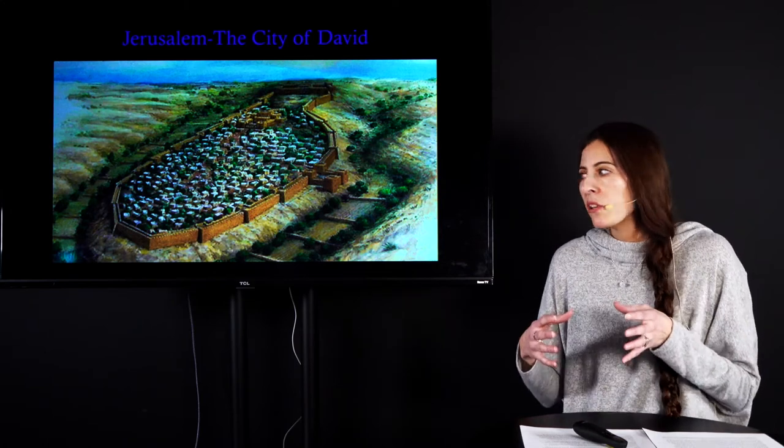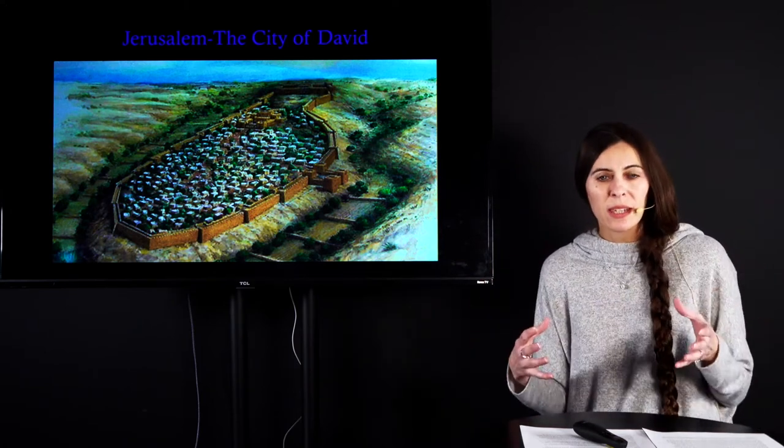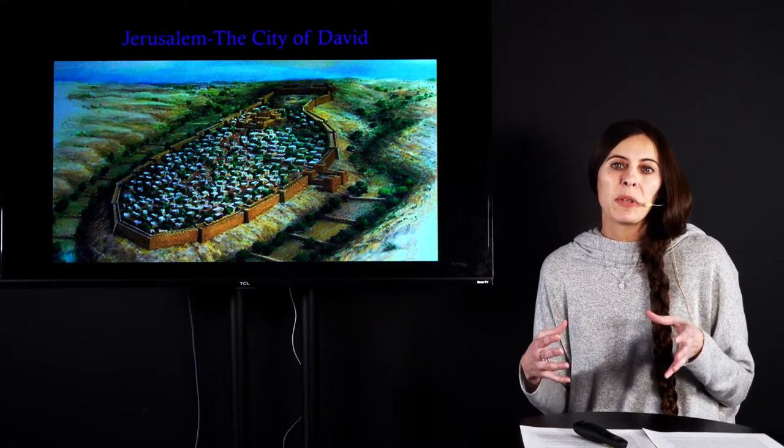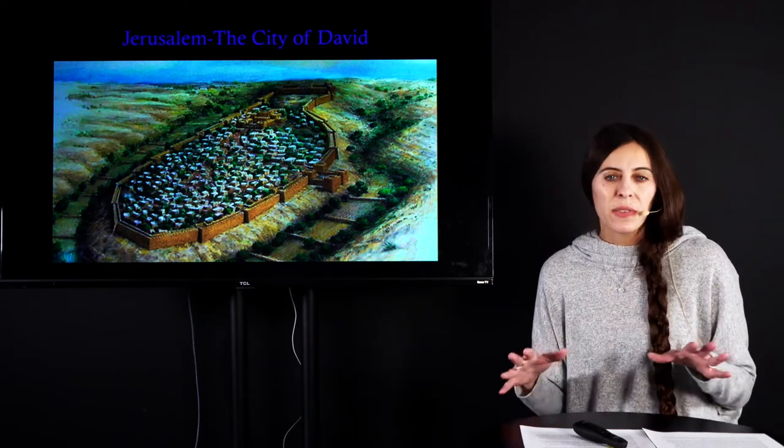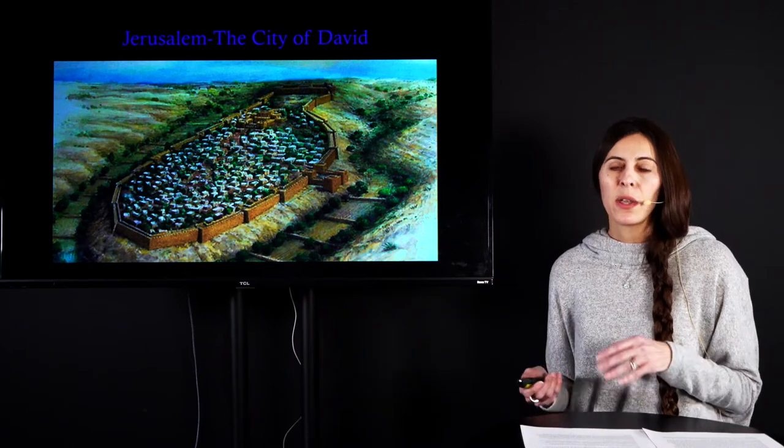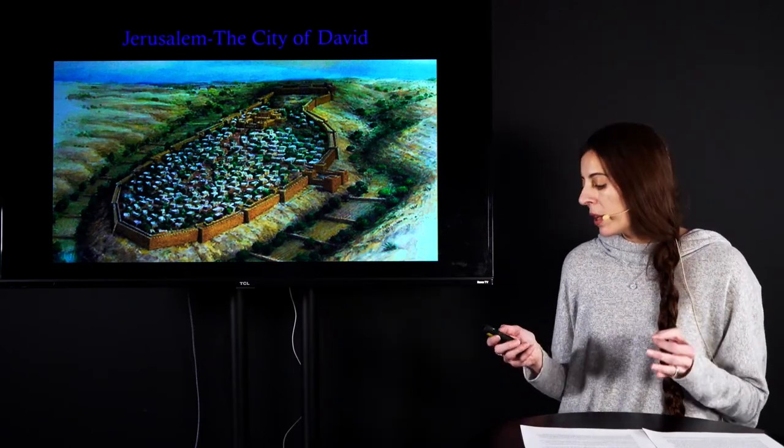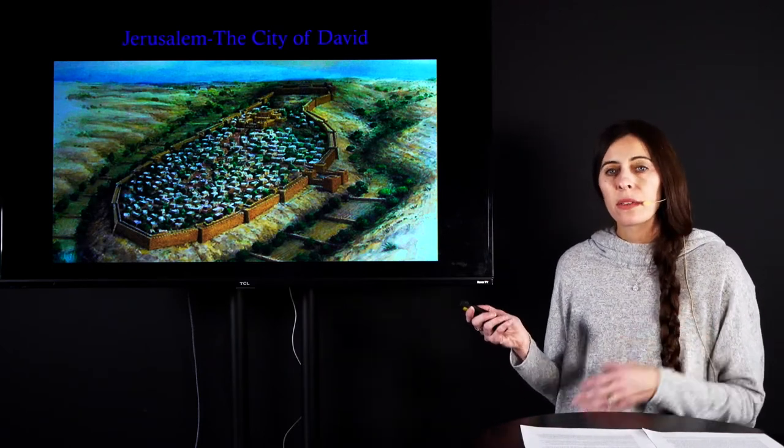And this did some amazing things for Jerusalem, for the Israelites. It gave them a new sense of identity, national identity. It gave them a new sense of unity. But even more so, it really elevated David in their eyes. They now saw David as truly God's anointed king, and that God was with him. And so David, he doesn't want to just unite the people politically. He wants to unite the people spiritually under the God he loves.